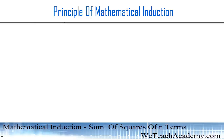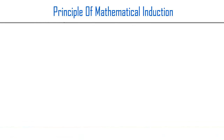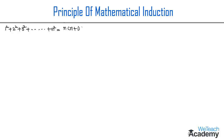Welcome to vdshacademy.com. In this presentation we are going to prove the formula for the sum of the squares of natural numbers by using the principle of mathematical induction. The sum 1² + 2² + 3² + ... + n² is given by n(n+1)(2n+1)/6. Let us consider this as P(n) and name it as equation 1.